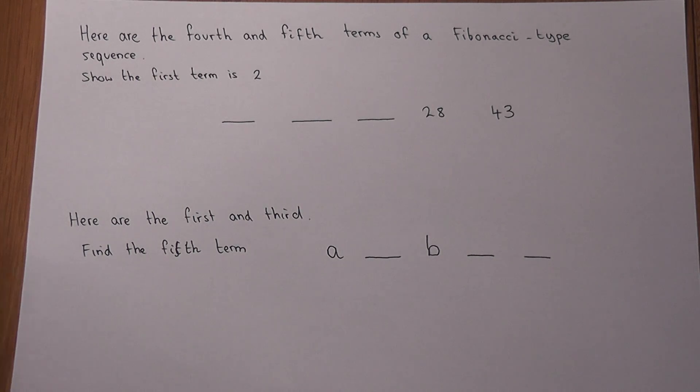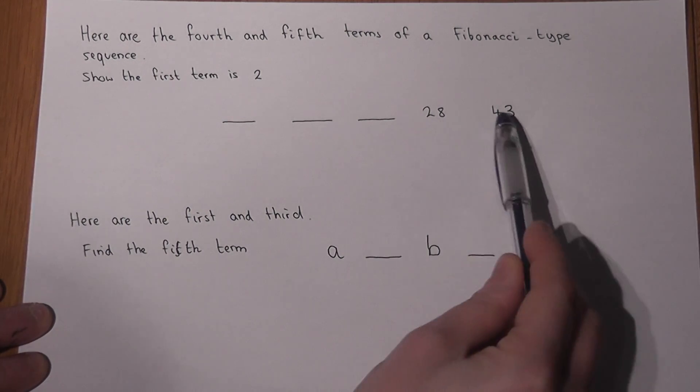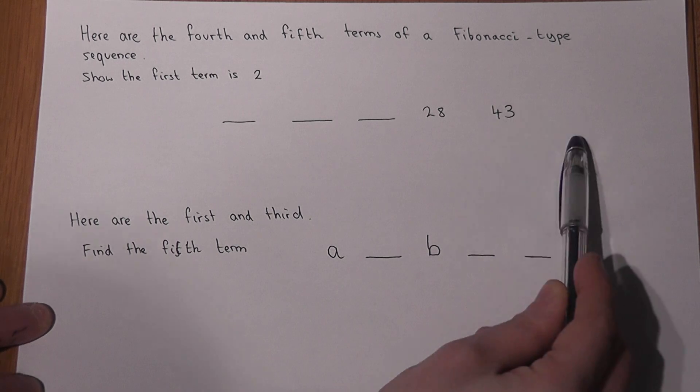This example revises what are called Fibonacci-type sequences, and these are sequences where if you know two terms, if you add them together, we can find the next term along.